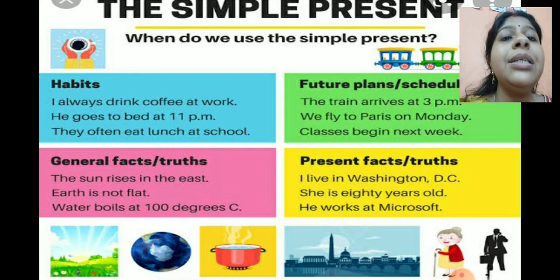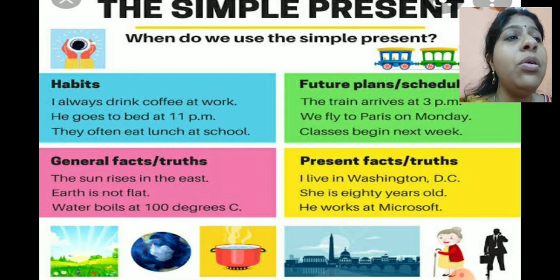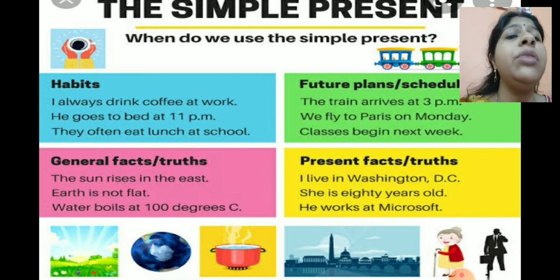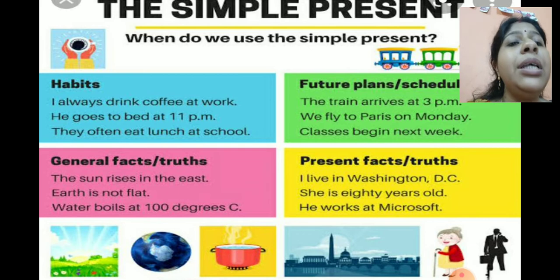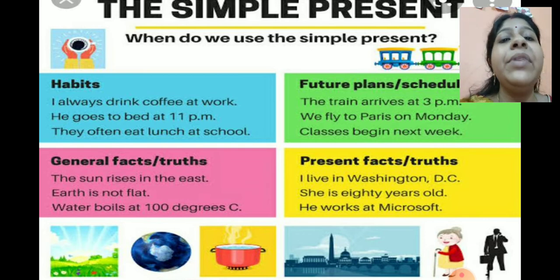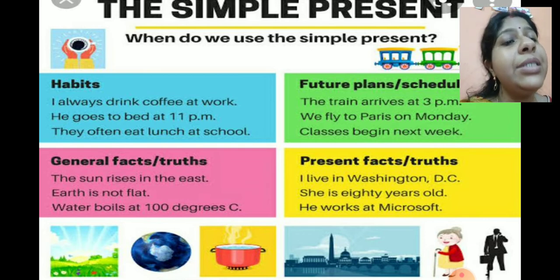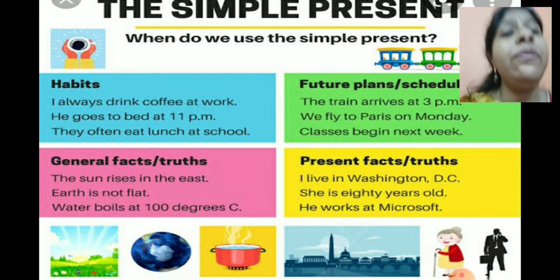'The sun rises in the east' — it is a general truth, it is not going to change. 'Rise' is your verb and you add S: 'rises'. 'The earth is not flat.' 'Water boils at 100 degrees centigrade.' All these are general facts and truths.